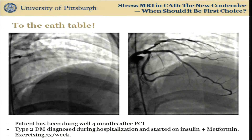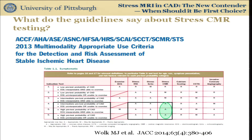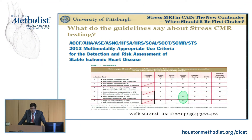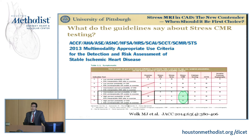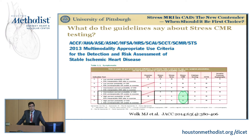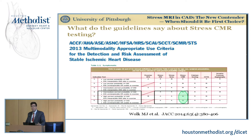Chronological age versus biological age — that's an important concept. What do the guidelines say about stress CMR? The 2013 appropriateness criteria mentioned that cardiac MRI should be considered similar to stress nuclear and stress echo in patients with intermediate or high pretest probability of CAD who have an uninterpretable EKG — such as left bundle branch block or paced rhythm — or in patients with high pretest probability of CAD. The assessment of pretest probability still predominantly uses Diamond-Forrester criteria, which, as prior speakers noted, might be overestimating risk of disease, and by doing that, we might be testing many patients who might not need testing.